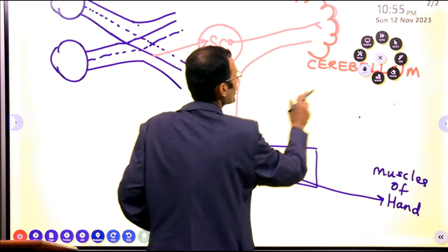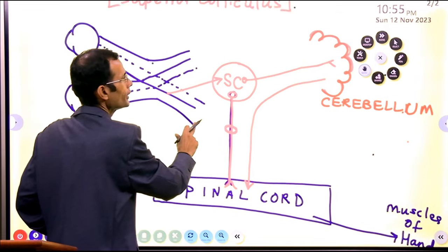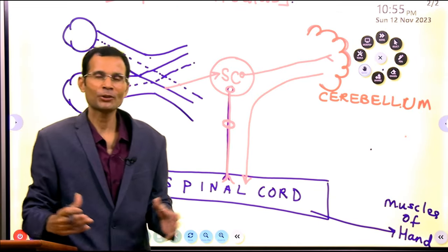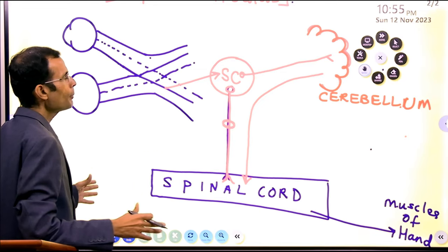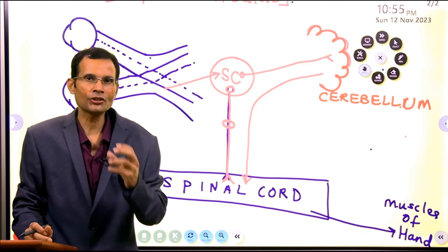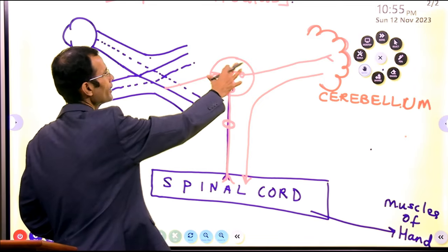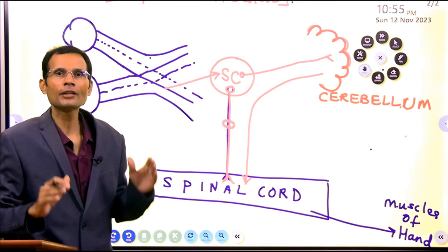So this is the circuitry for the hand-eye coordination or eye-hand coordination, whichever way you like to call it. But remember, the structure which is key, which is central to this entire circuit is undoubtedly the superior colliculus.